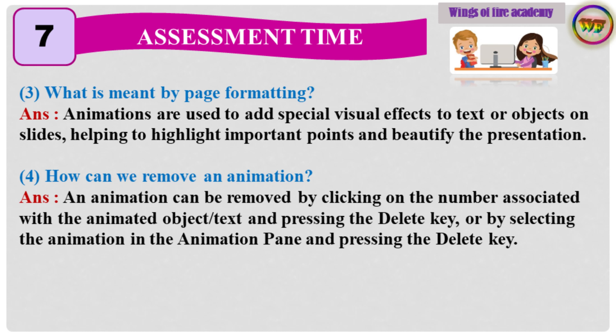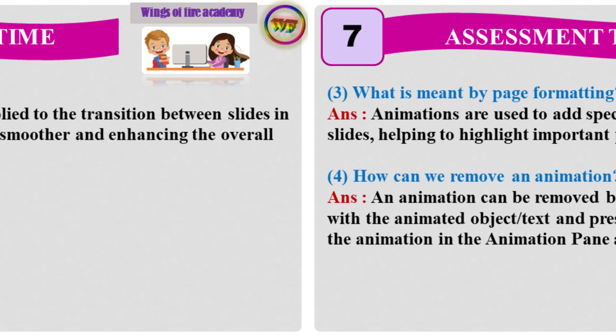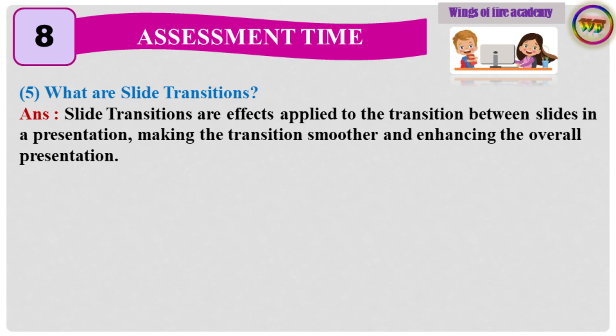Question 3: What is meant by page formatting? Answer: Animations are used to add special visual effects to text or objects on slides, helping to highlight important points and beautify the presentation. Question 4: How can we remove an animation? Answer: An animation can be removed by clicking on the number associated with the animated object or text and pressing the Delete key, or by selecting the animation in the Animation Pane and pressing the Delete key. Question 5: What are slide transitions? Answer: Slide transitions are effects applied to the transition between slides in a presentation, making the transition smoother and enhancing the overall presentation.